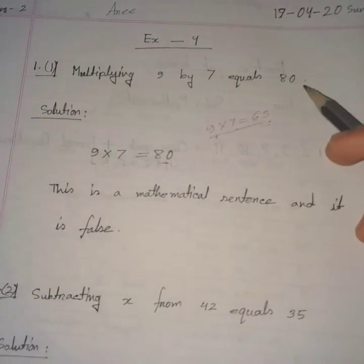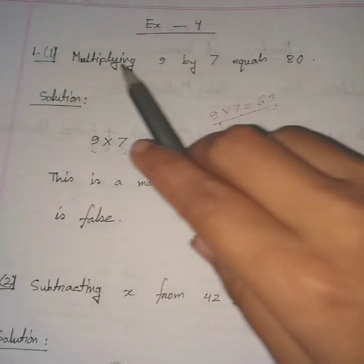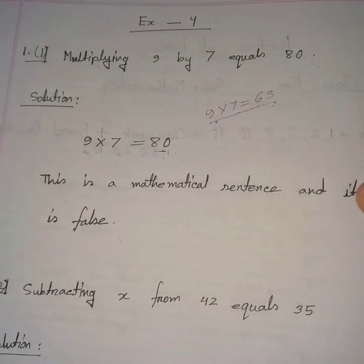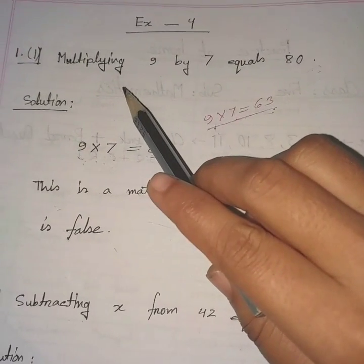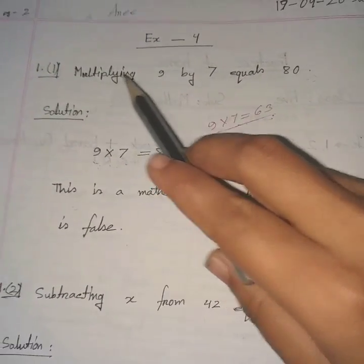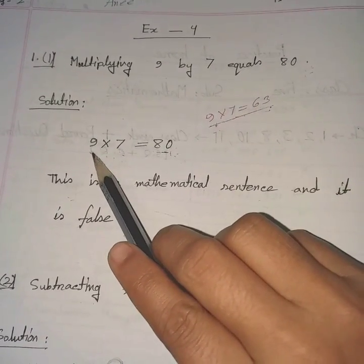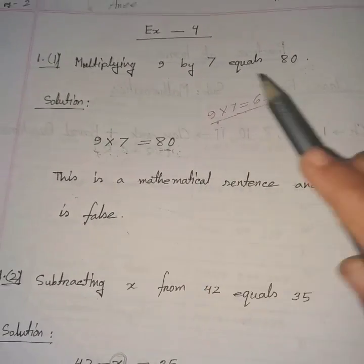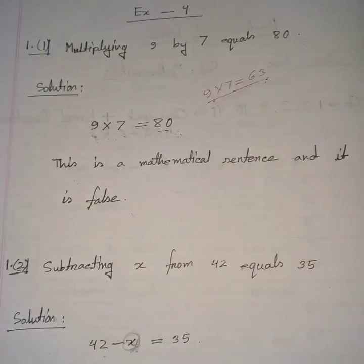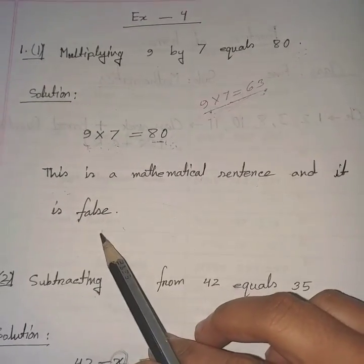Let's try to understand the problem. According to the question, we have to express this sentence into a mathematical sentence and identify whether it is an open sentence or a mathematical sentence. The question says multiplying 9 by 7 equals 80, so we write 9 × 7 = 80. But we know 9 × 7 = 63, so this is a mathematical sentence and it is false.